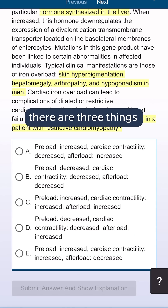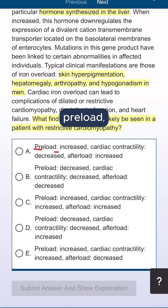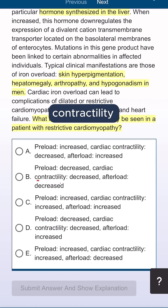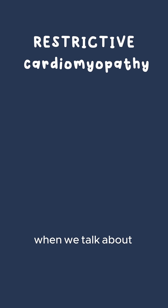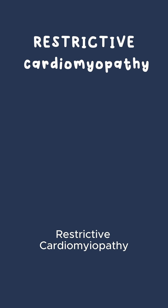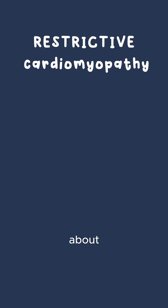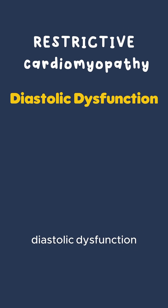As you can see, there are three things present in all of them: preload, contractility, and afterload. When we talk about restrictive cardiomyopathy, we always have to think about diastolic dysfunction.